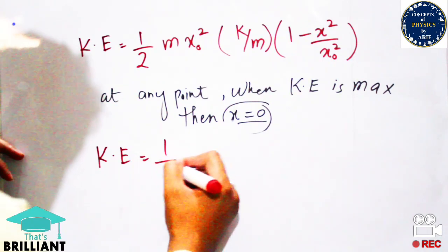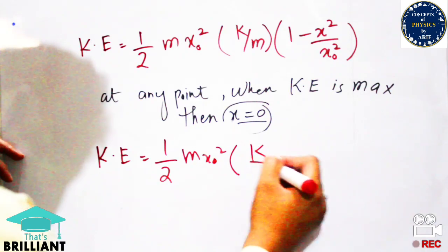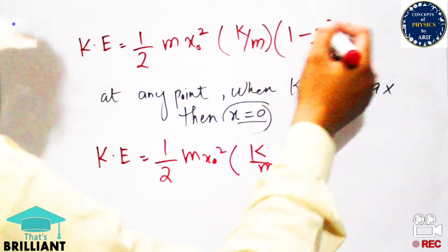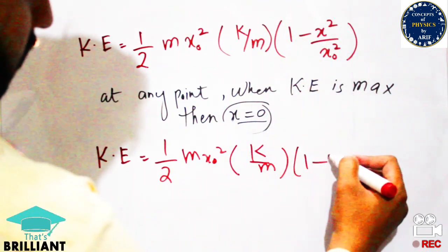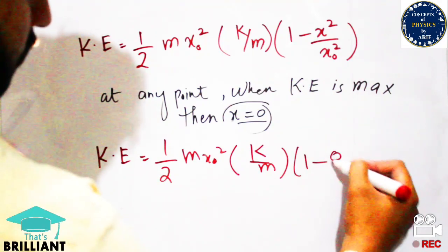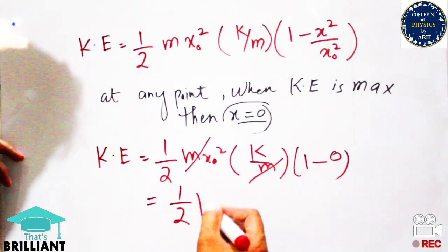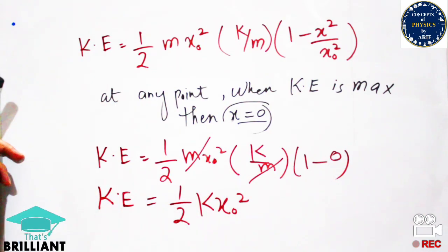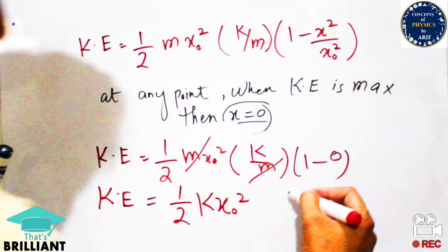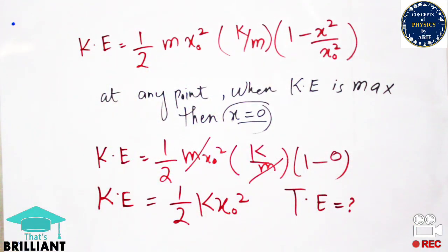If we put X = 0 into the kinetic energy expression, KE = ½MX₀² · (k/M) · (1 − 0) = ½kX₀². So the kinetic energy at the mean position equals ½kX₀². Similarly, the potential energy at the extreme point equals ½kX₀².